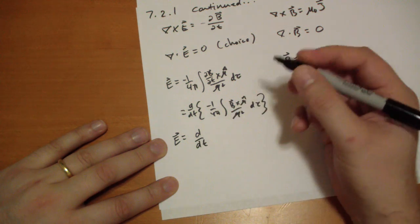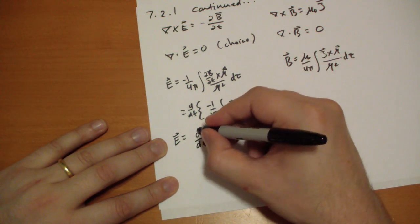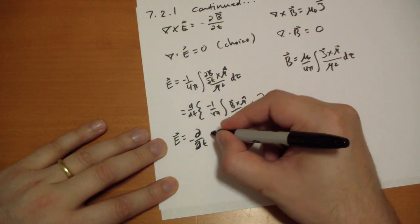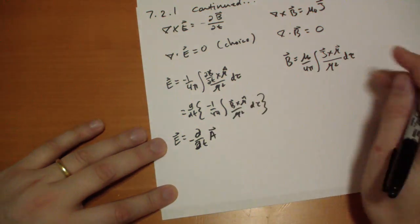So this becomes, I'm sorry, partials, minus d by dt of the A vector.